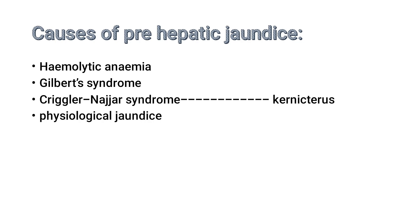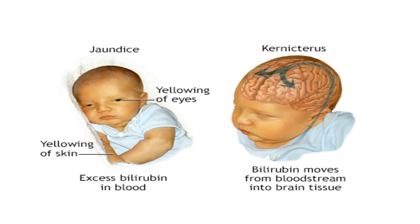Physiological jaundice occurs in almost every newborn baby and is considered normal. The UGT enzyme is present but not functioning very well, so unconjugated bilirubin accumulates in the baby's body. If it exceeds the normal quantity, kernicterus can occur even in physiological jaundice. The treatment is phototherapy, which is very useful — it converts unconjugated bilirubin into the conjugated form.